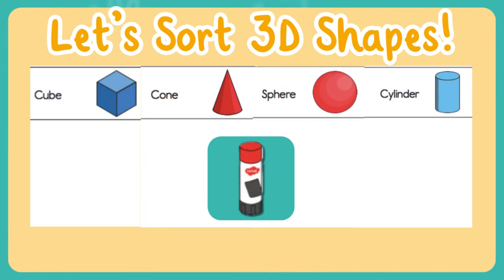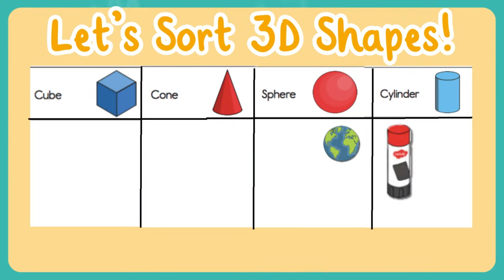Let's take a look at our next shape — a glue stick. Where should we sort a glue stick? Which 3D shape is a glue stick? It's a cylinder. It has three faces, two edges, and no vertices.